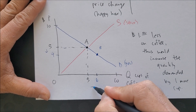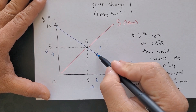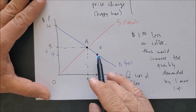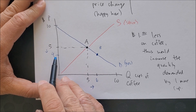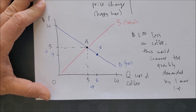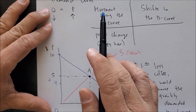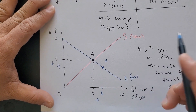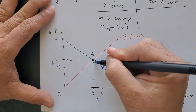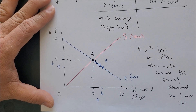At a lower price you want to consume more — that's the law of demand. At point B you are now wanting to consume six cups of coffee, one more cup, all because of that price change during happy hour today. This is called a movement along the demand curve, as we move from point A to point B.